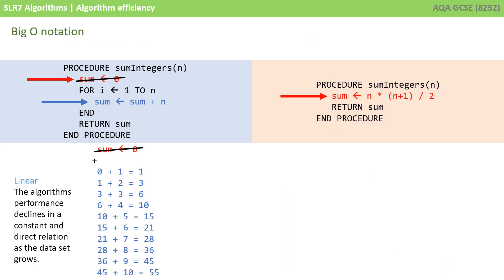Going back to the example from earlier, we can go a step further now that we're beyond the GCSE spec. Let's ignore that first line of code that's executed only once. The blue line is executed ten times — it's the significant part of this algorithm. As the value of n grows, to 100 or 1000, the first red line executing once becomes very insignificant. Focusing on the blue line, we can see this algorithm has what we call a linear time complexity — the algorithm's performance declines in a constant and direct relation as the size of the data set grows.